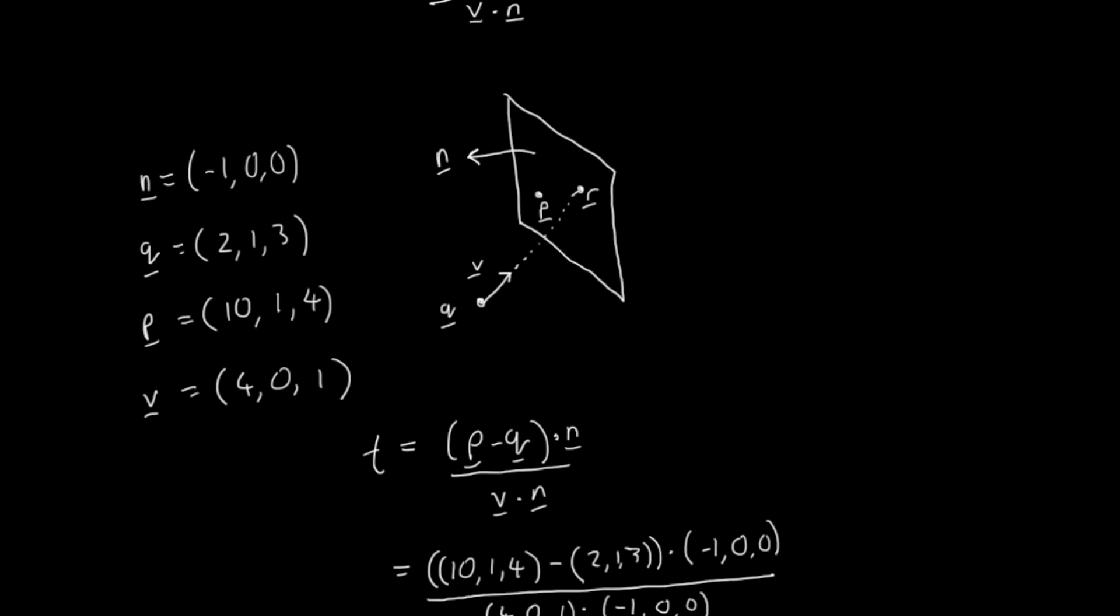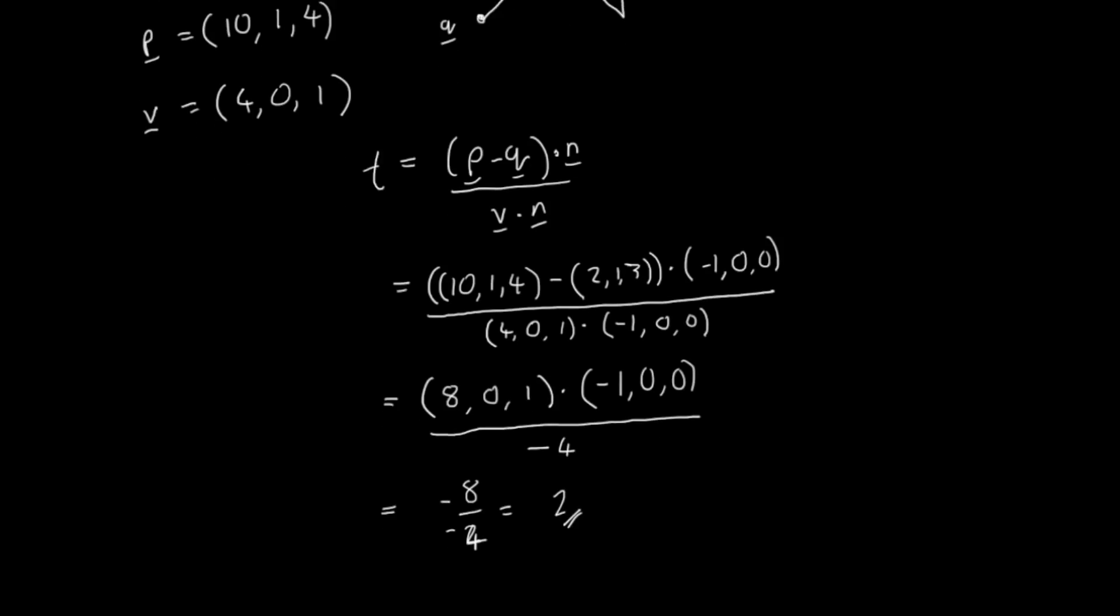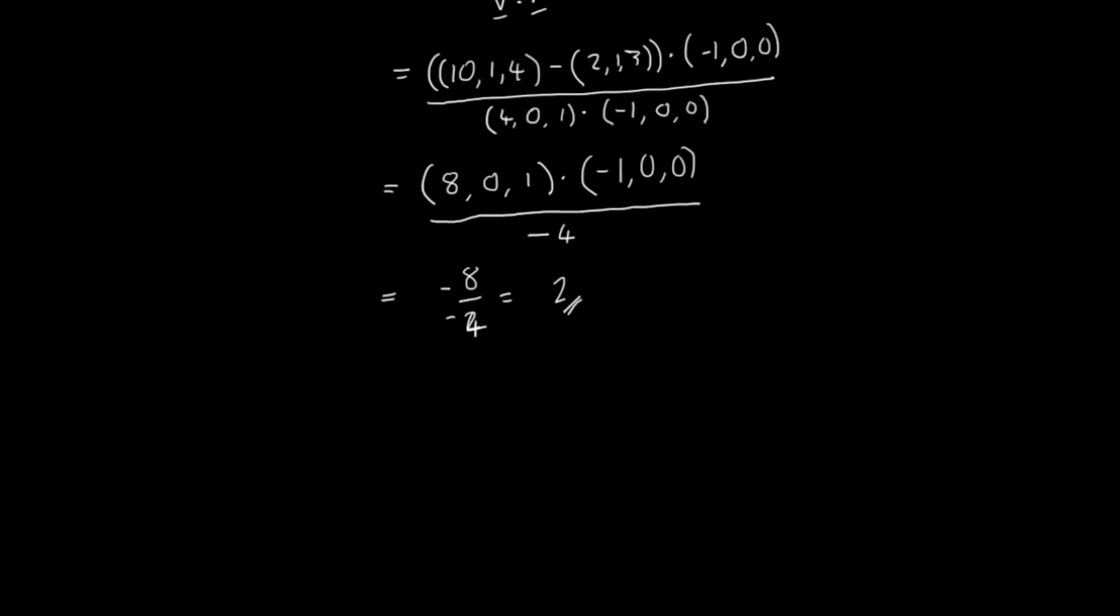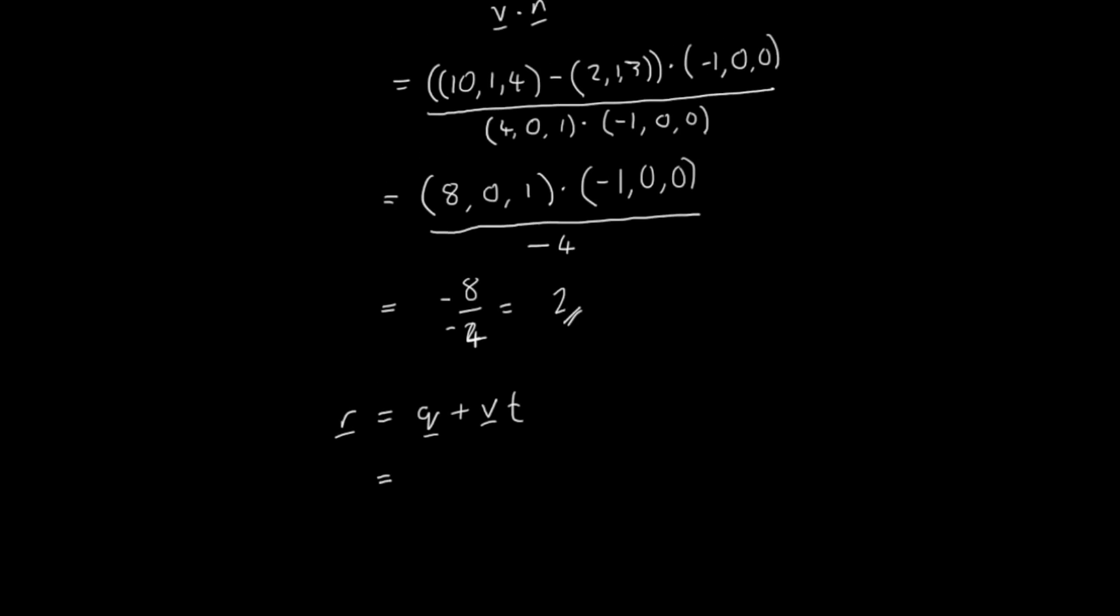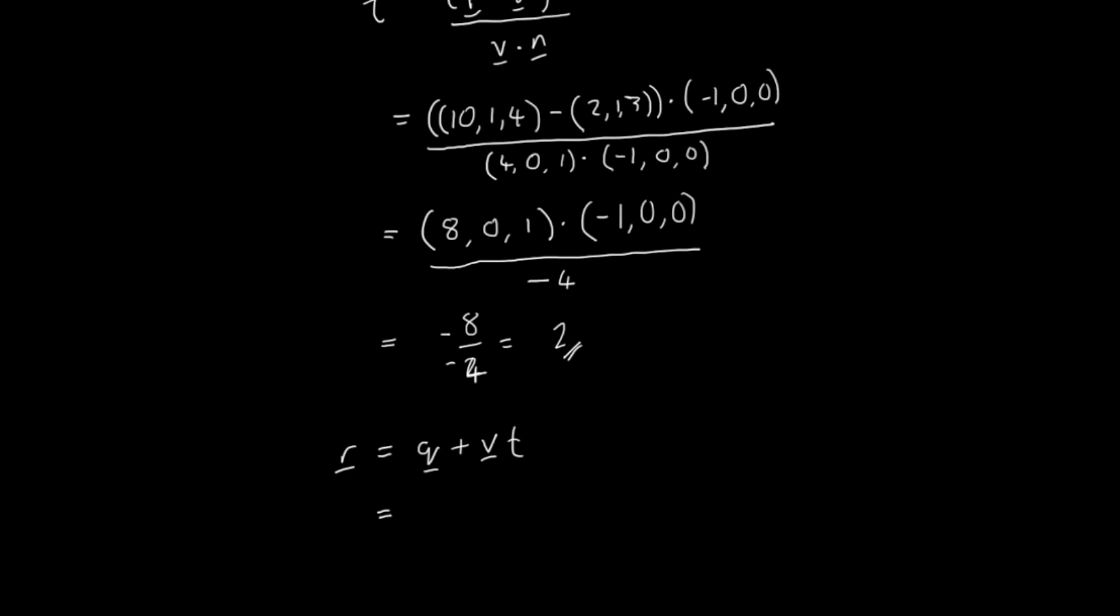So whereabouts is it going to collide? Well, all I can do now is simply substitute my value of t into the vector equation of a line. So if you recall, the vector equation of a line was q plus vt. Now, I've forgotten what q and v are, so I'm going to have to scroll up a bit. So q is 2, 1 and 3. v was 4, 0 and 1. And we just calculated t to be 2.